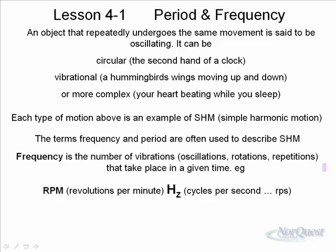So frequency is the number of vibrations, whatever type of vibration they are, an oscillation, rotation, repetition, and so on, that take place in a given time. So revolutions per minute is a certain number of revolutions in a given time, in this case, 60 seconds or a minute.